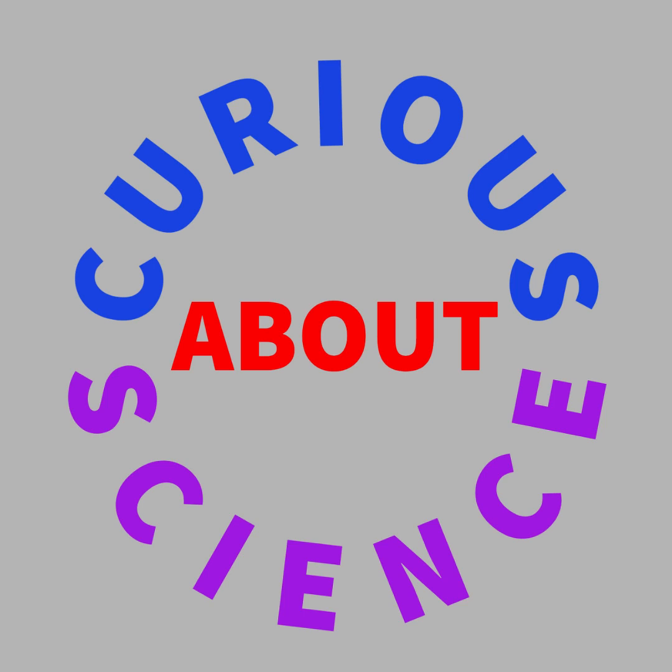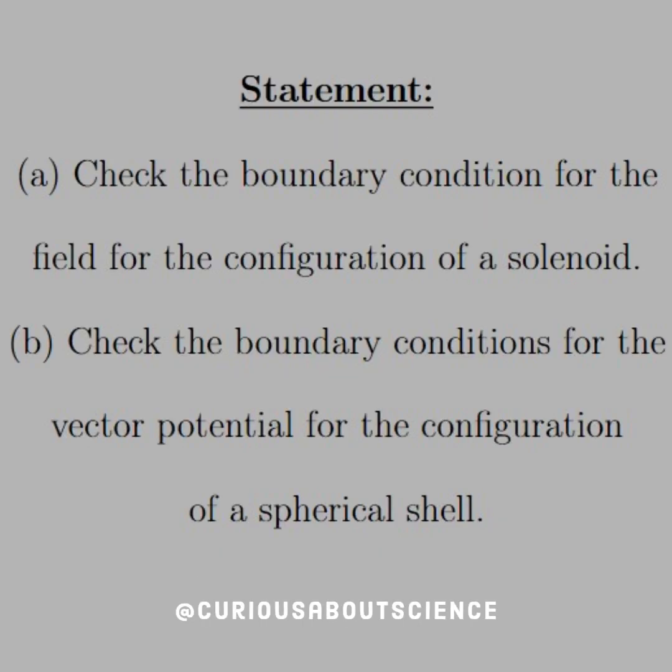Welcome back. Today our statement reads: Part A, check the boundary condition for the field for the configuration of a solenoid. Part B, check the boundary conditions for the vector potential for the configuration of a spherical shell.